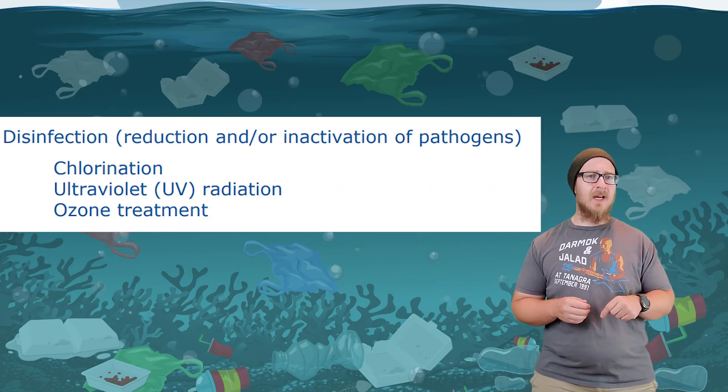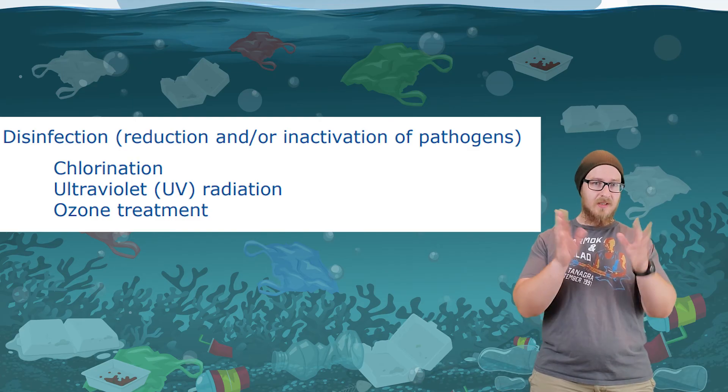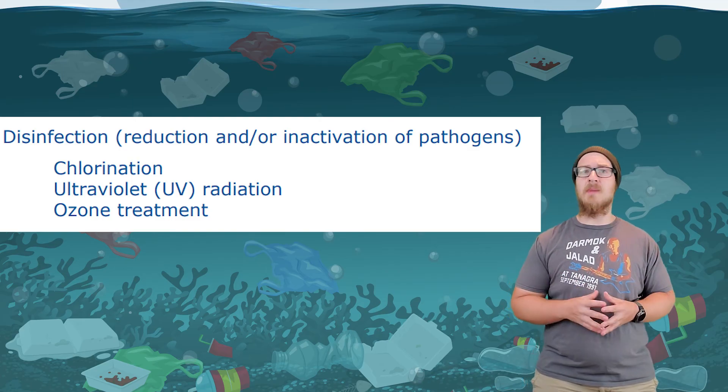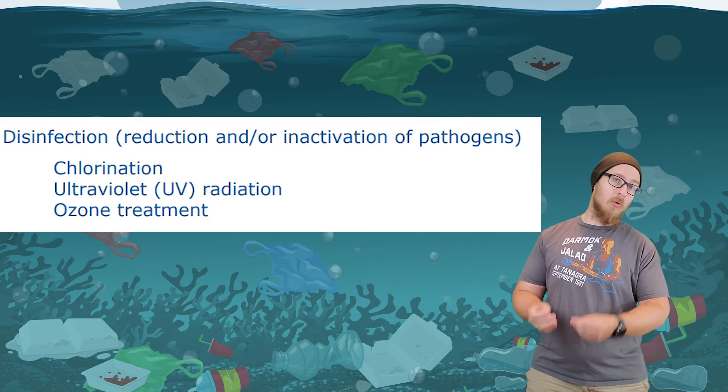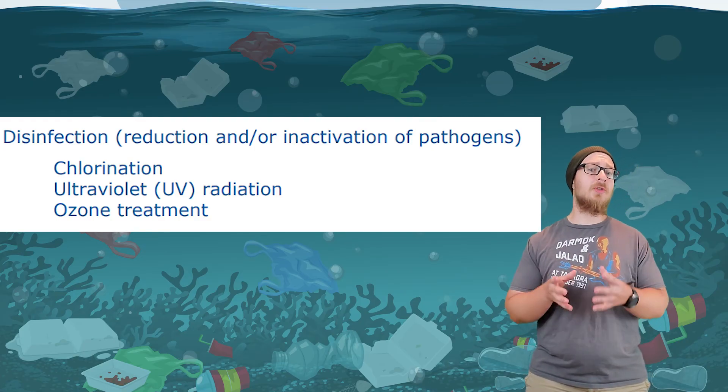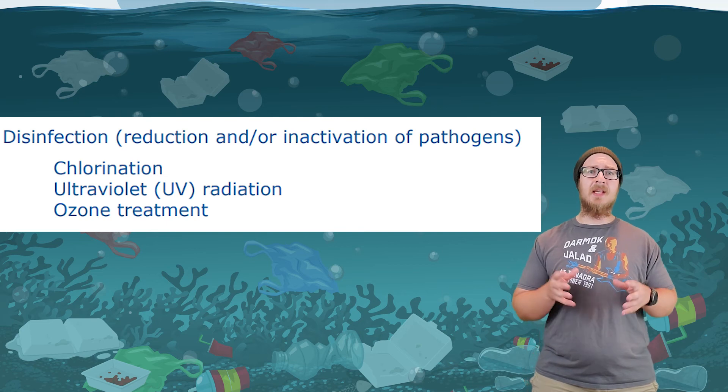The last step is disinfection, which sometimes occurs before stage three. Disinfection looks different across treatment plants: some use ultraviolet light to kill bacteria, some add chlorine to the water, and some pump ozone in — but they all serve the same purpose of killing harmful bacteria. The water that results from all these stages is technically safe enough to drink, but it is returned to the environment through a pipe into a body of water. Not all wastewater treatment plants use all three stages, which may cause regional problems with nutrient pollution or bacterial contamination.